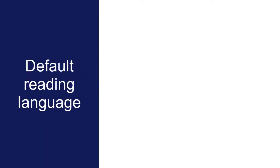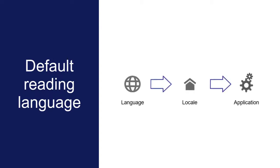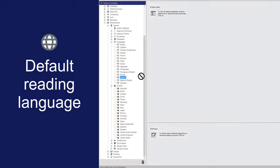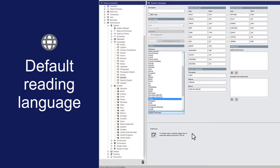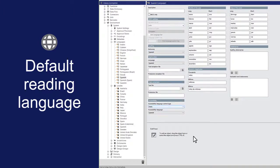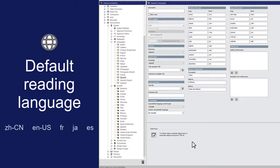As a best practice, you should set a default reading language to apply to everything within the design. The default reading language is specified by the language object that is associated with the application's default locale in Design Manager. To set the reading language on the language object, open it in the Property panel. In the Accessibility area, specify a reading language. You can select from a list of languages, or you can set the language using a scale or string variable with an ISO language code for its value.